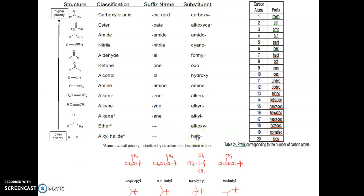For different numbers of carbon atoms, there are prefixes: one carbon = meth-, two = eth-, three = prop-, four = but-, five = pent-, six = hex-, seven = hept-, eight = oct-, nine = non-, ten = dec-, eleven = undec-, twelve = dodec-, thirteen = tridec-, fourteen = tetradec-, fifteen = pentadec-, sixteen = hexadec-, seventeen = heptadec-, eighteen = octadec-, nineteen = nonadec-, twenty = icos-.